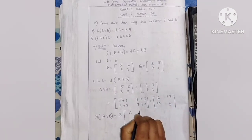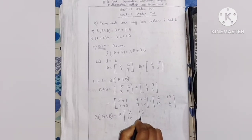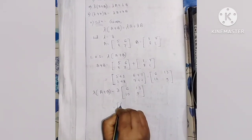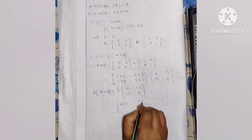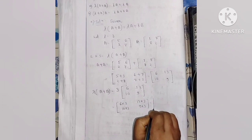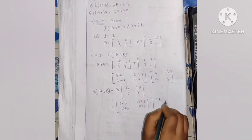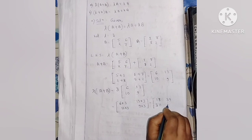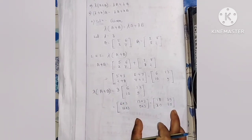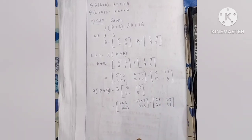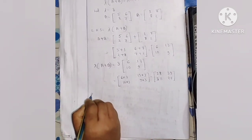So we have the matrix [6, 13; 3, 9]. We multiply by lambda equals 3. That means: 6 into 3 is 18, 13 into 3 is 39, 3 into 3 is 9... wait, 10 into 3 is 30, 9 into 3 is 27. So lambda times (A plus B) gives us [18, 39; 30, 27]. That is our left-hand side result.